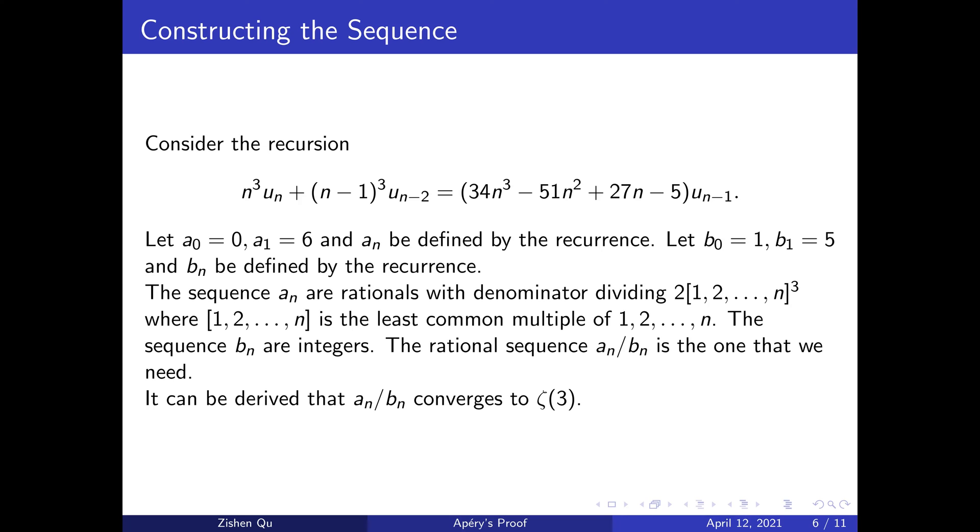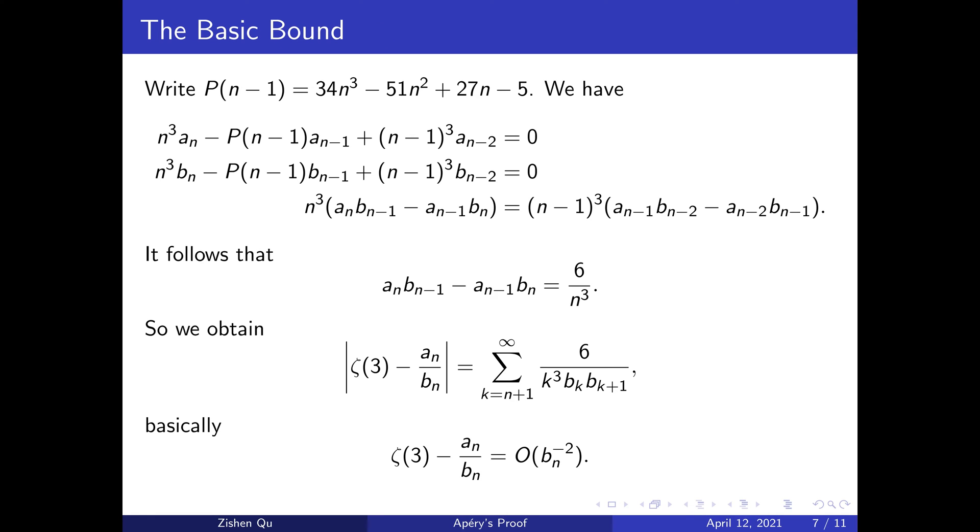Let us try to analyze the error in these rational approximations. First, we'll do it in terms of b_n. Write the coefficient of the recurrence that is a polynomial in n as P(n-1), and we can rewrite the recurrence relation for both of the sequences as follows. By multiplying the first equation by b_{n-1} and the second by a_{n-1}, we derive the third equation on this slide.